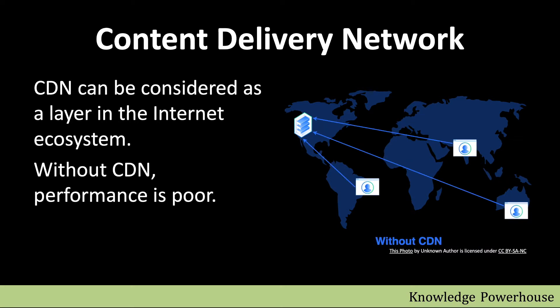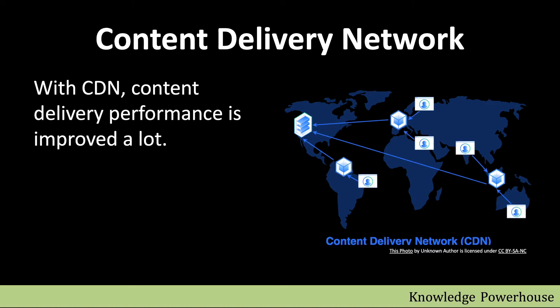CDN is considered a layer in the internet ecosystem. Without CDN, the performance of content distribution is quite poor — users have to reach a server on a different continent to get content, which takes a lot of time. With CDN, users go to nearby nodes. Users in Asia and Australia go to the nearest node, and users in Europe and Africa reach out to a nearby node for their content needs, improving performance significantly.